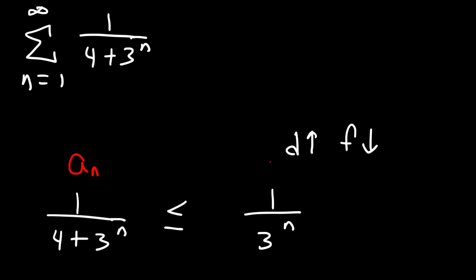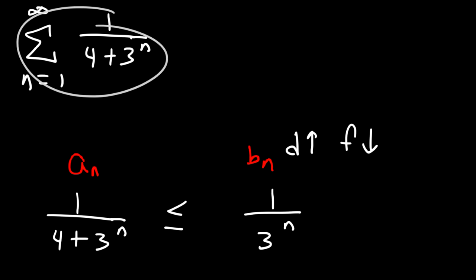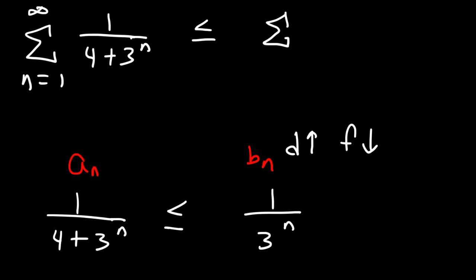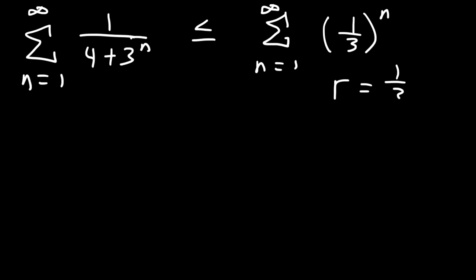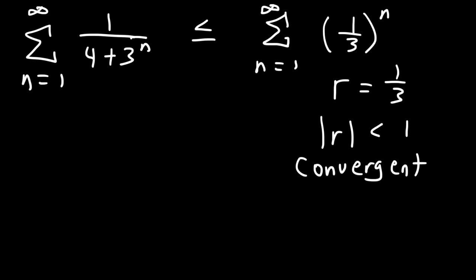So this series is going to be smaller than 1 over 3 to the n. We can rewrite 1 over 3 to the n as (1/3) raised to the n — that is a geometric series with a common ratio of 1/3. Since the common ratio is less than 1, the geometric series is convergent. If the larger series is convergent, then the smaller series must be convergent as well. So by the direct comparison test, we know that this series converges.